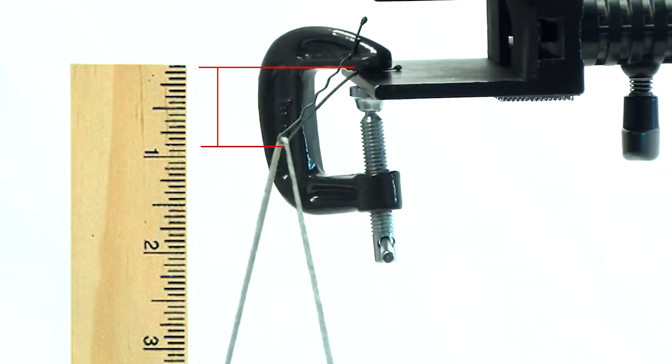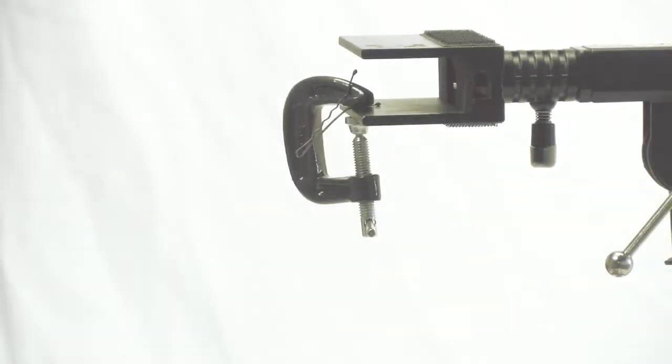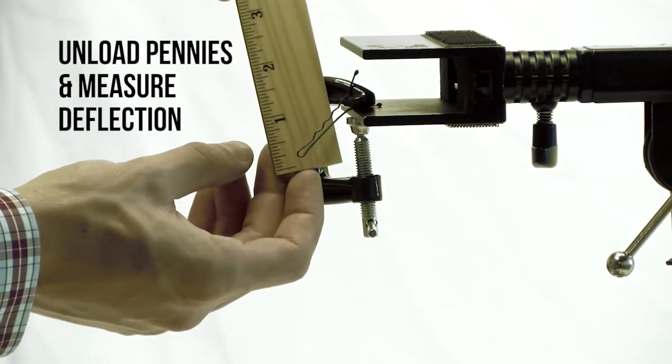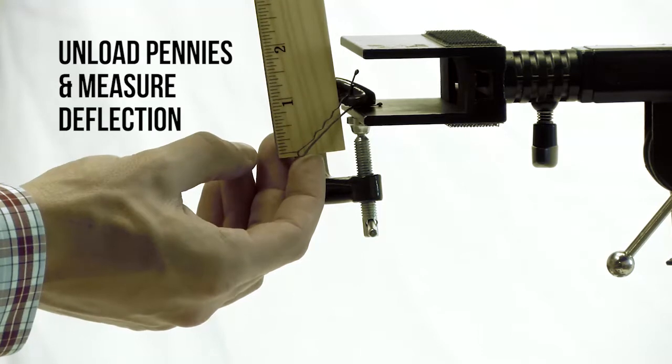Measure and record the deflection of the control bobby pin using a ruler. Unload the control bobby pin. Measure and record any permanent deflection.